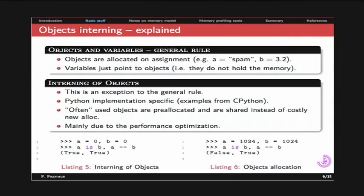Often-used objects are pre-allocated. Instead of creating a new zero every time you write 'a = 0', the zero is shared among all instances. Here we assign zero to a and b — writing 'a is b' returns True. But if we assign a large number, 'a is b' returns False even though the values are equal. This is highly Python implementation specific.